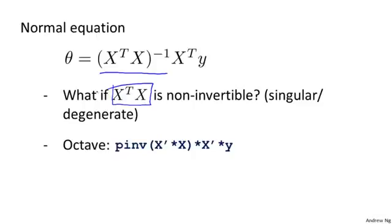For those of you that know a bit more linear algebra, you may know that only some matrices are invertible and some matrices do not have an inverse. We call those non-invertible matrices singular or degenerate matrices.